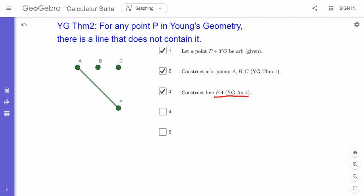And so the next step here is, well, hey, either B or C is not in the line PA, right? It's not an element of.